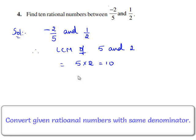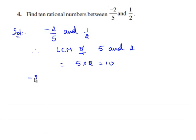Now, express each of these rational numbers with their denominator as LCM. Therefore, minus 2 by 5 is equal to, with 10 as denominator, we have 5 times 2 is 10. Therefore, minus 2 times 2 is equal to minus 4 by 10.